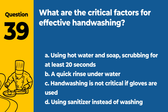Question 39. What are the critical factors for effective handwashing? A. Using hot water and soap, scrubbing for at least 20 seconds. B. A quick rinse under water. C. Handwashing is not critical if gloves are used. D. Using sanitizer instead of washing. Answer: A. Effective handwashing requires using hot water and soap and scrubbing for at least 20 seconds to remove pathogens.